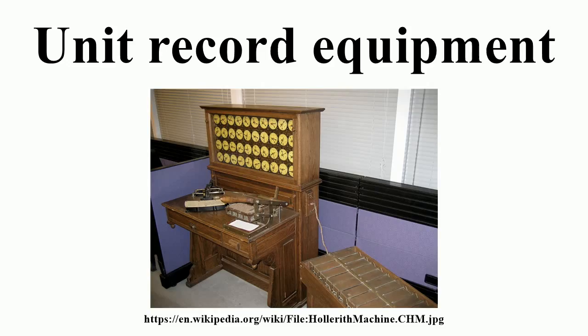1949 — The IBM 024 card punch, 026 printing card punch, 082 sorter, 403 accounting machine, 407 accounting machine, and card programmed calculator introduced. 1952 — Bull Gamma 3 introduced, an electronic calculator with delay line memory, programmed by a connection panel, connected to a tabulator or card reader punch. The Gamma 3 had greater capacity, greater speed, and lower rentals than competitive products. 1952 — Remington Rand 409 calculator introduced. 1952 — Underwood Corp acquires the American assets of Powers Samas.